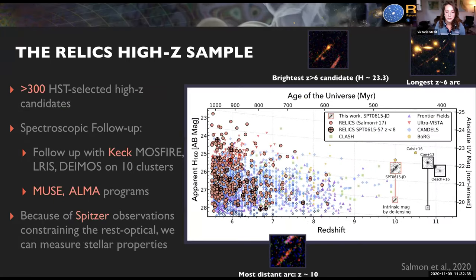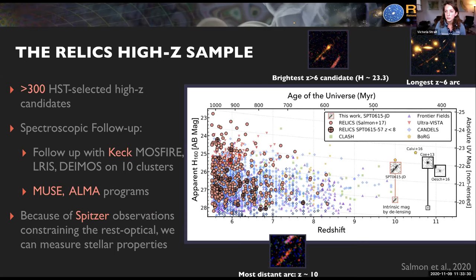I'm mostly focused on the high-redshift sample, which I'm plotting in apparent and absolute magnitude versus redshift. The pink points are our high-redshift sample, cut off at redshift five and a half. These are all Hubble Lyman break selected galaxies. Several of them have been involved with spectroscopic follow-up programs — our group is using Keck MOSFIRE, LRIS, and DEIMOS on the best 10 clusters observable from Keck. Although I'll talk about this at the end, I'm mostly focused on the Spitzer observations, because while these were selected with Hubble for their redshift, constraining stellar properties is pretty much impossible without constraining the rest optical, which is redshifted into the near-infrared.